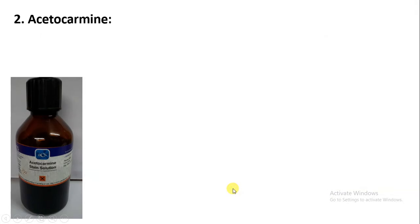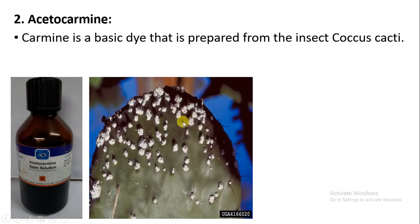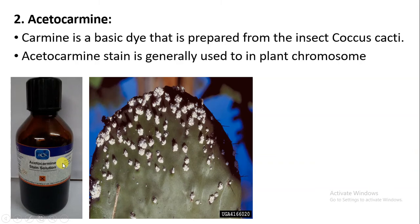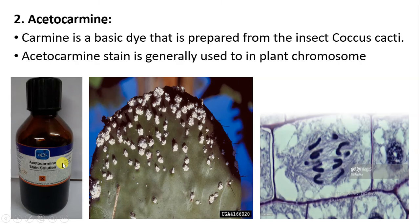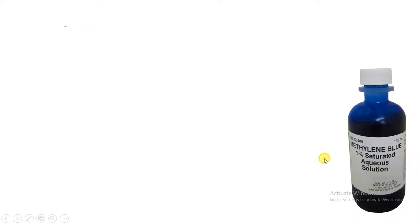Next, we will talk about another basic stain: acetocarmine. Acetocarmine is a basic dye that is prepared from the insect Coccus cacti. On certain cacti plants there are insects, through which the acetocarmine stain is formed. The acetocarmine stain is generally used to observe the chromosomes present in plants.